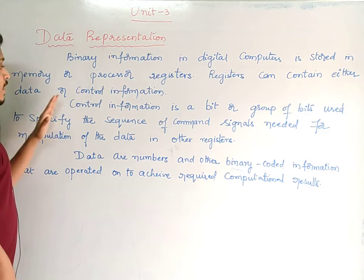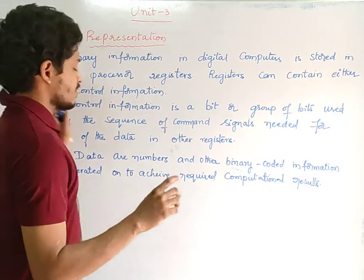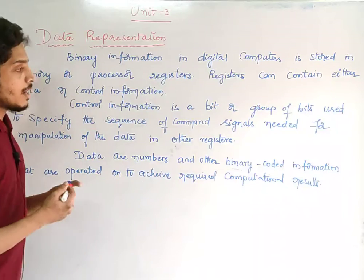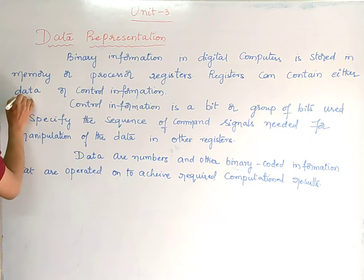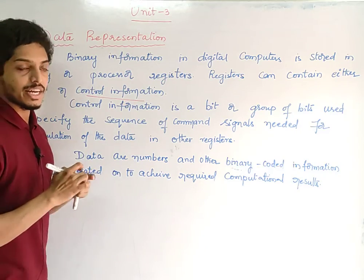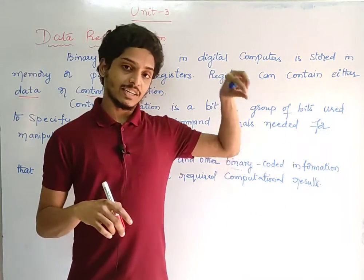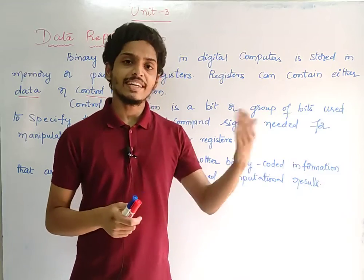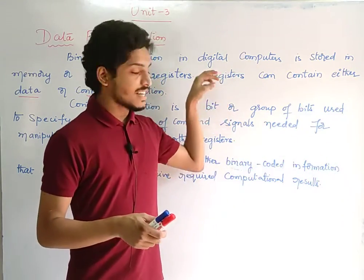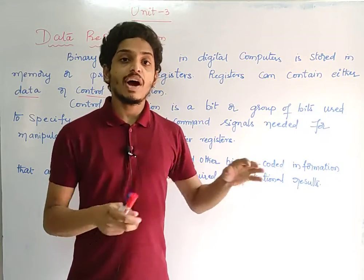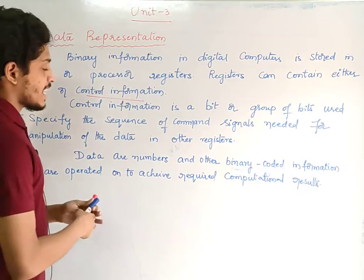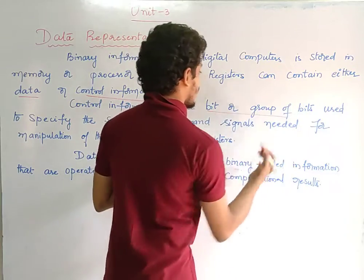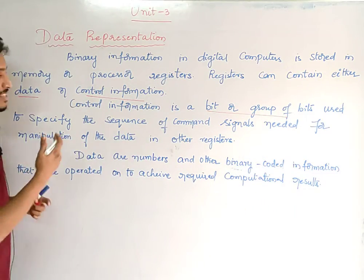Registers can contain either data or control information. The data can be an image or contents. The control information can contain a command or a particular address. Control information is a bit or group of bits.